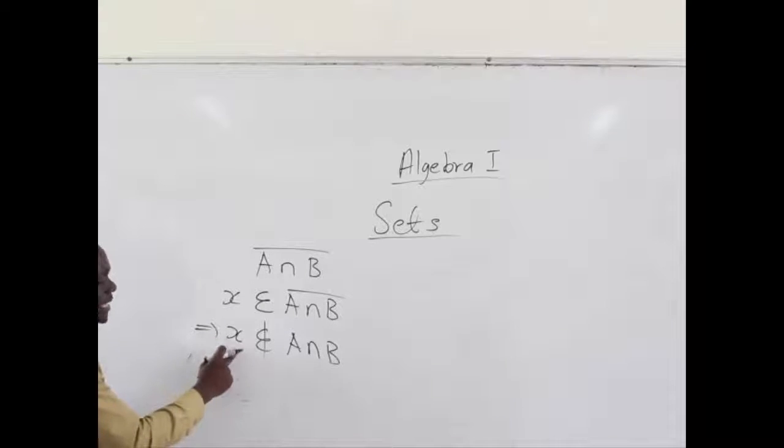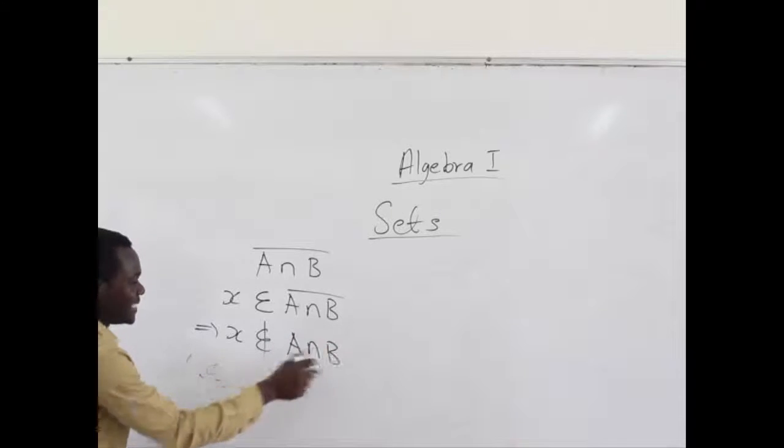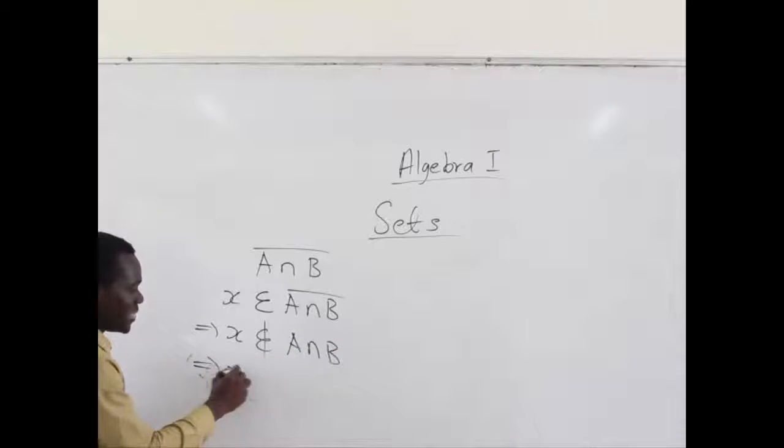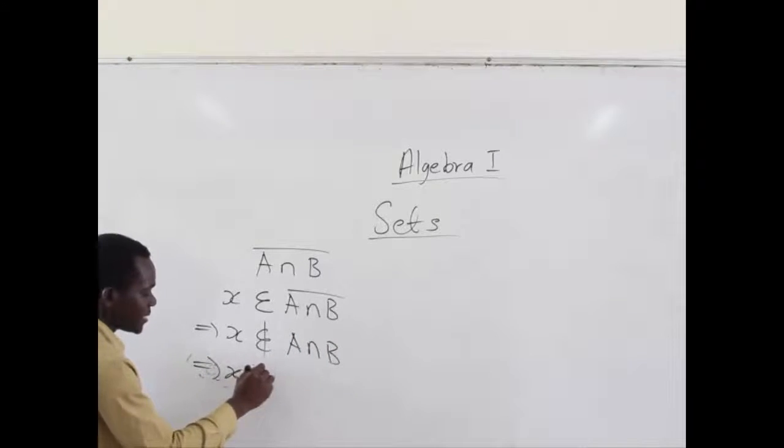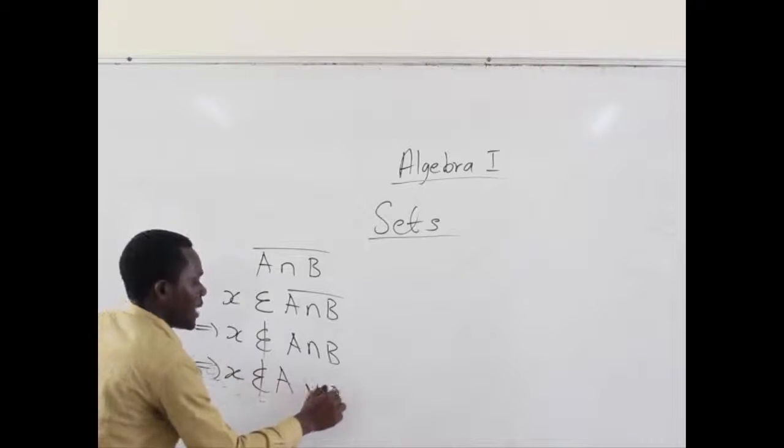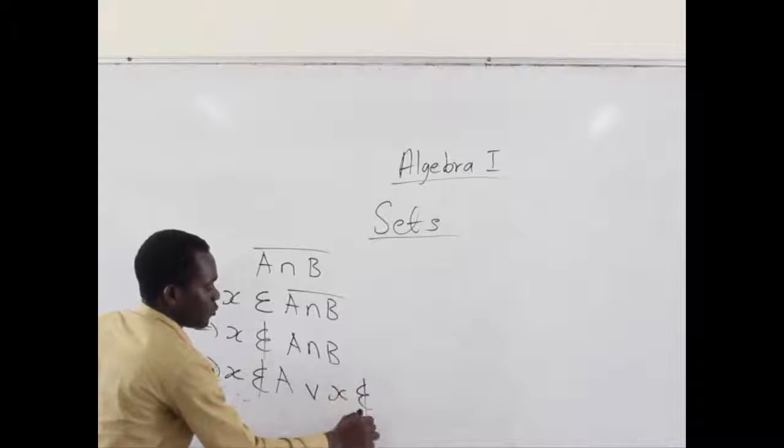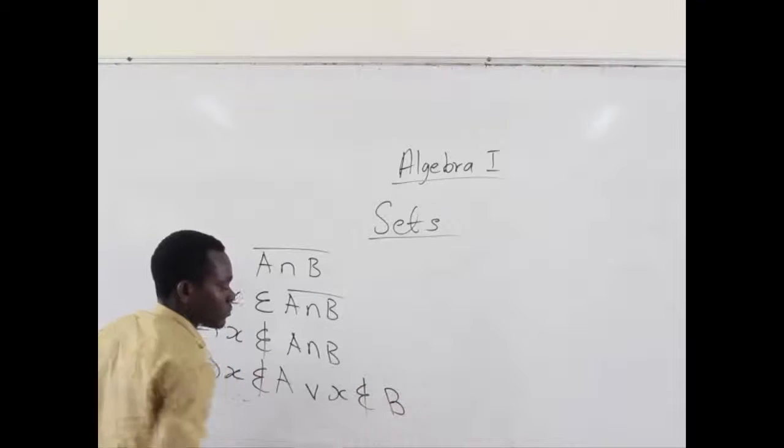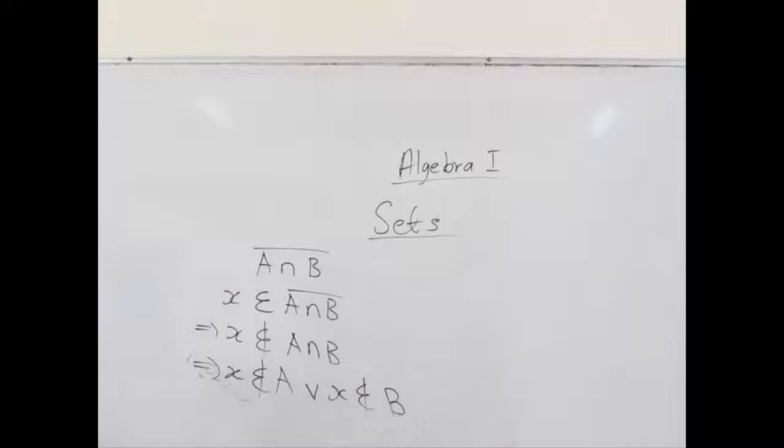If X does not belong to A intersection B, then it simply means X does not belong to A or X does not belong to B. Because union of sets talks about every element, but when it comes to intersection, it only talks about common elements.